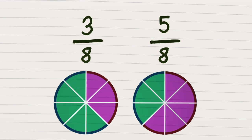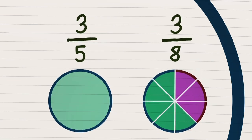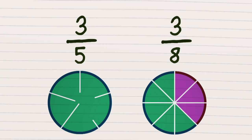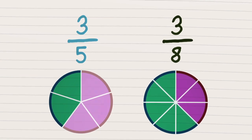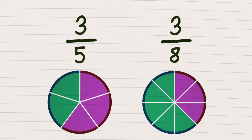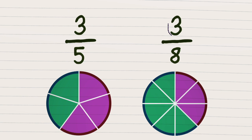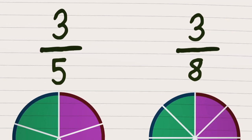How about comparing three eighths and three fifths? Notice that three fifths means out of five parts. The circle has been divided by eight, and we've taken three parts, giving three out of eight. Now we can see that the numerators match, so the fraction with the smaller bottom number is the highest.